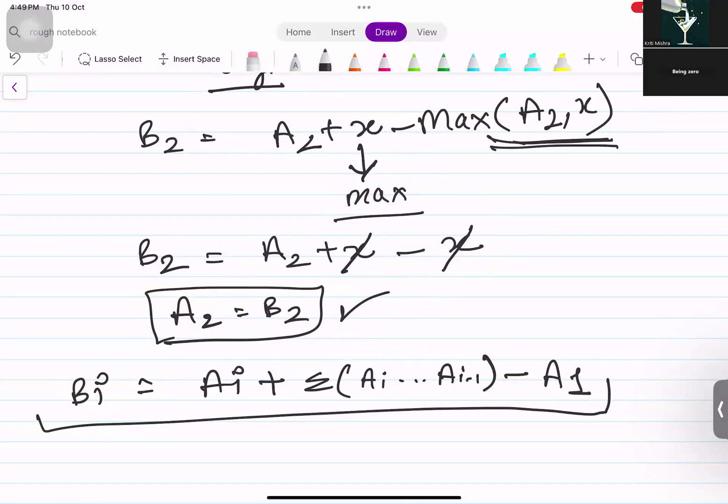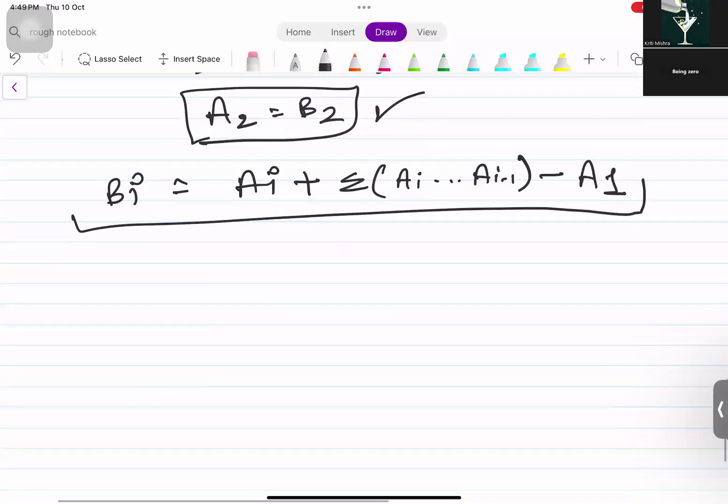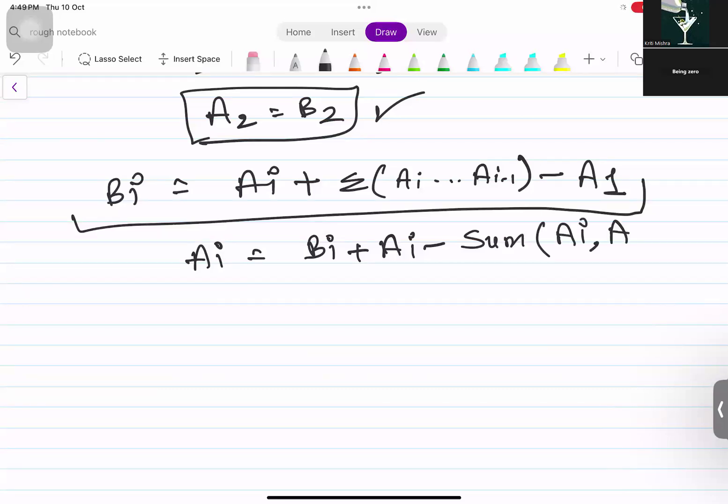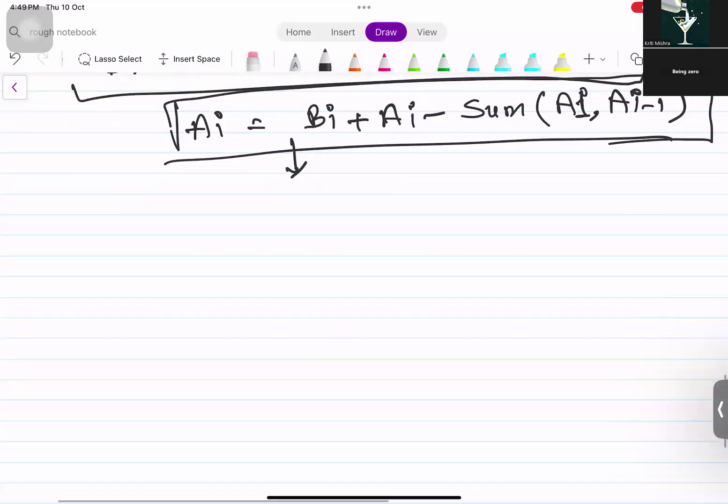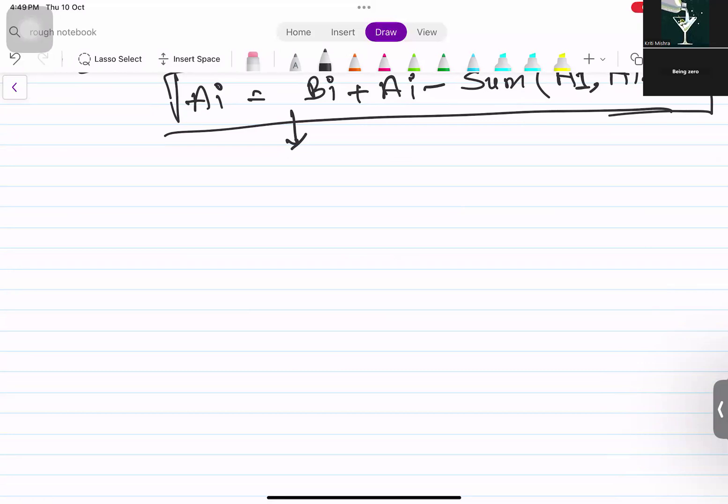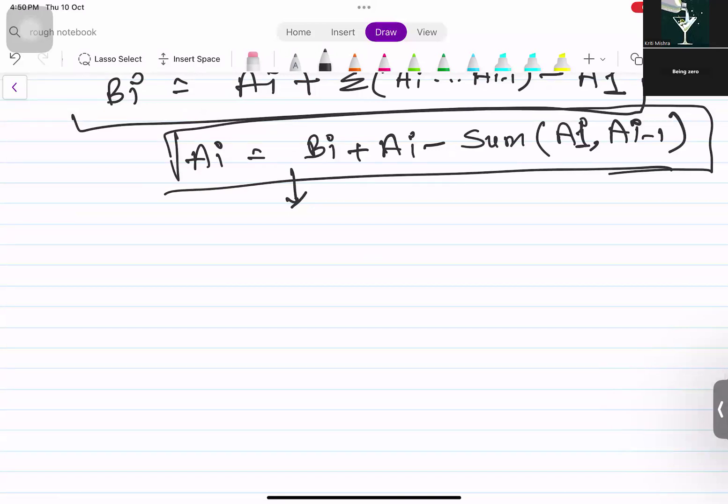If I want ai, then I send remaining elements to the other side. So bi plus ai minus summation of ai from 1 to ai-1. This is the formula that we need to use for finding the elements present in array A. And sum we can calculate. For every point we'll keep adding ai to the sum. We'll keep updating the sum after every iteration. And maximum is fixed, which is a of 1. We have assumed that A of 1 would be our maximum element.